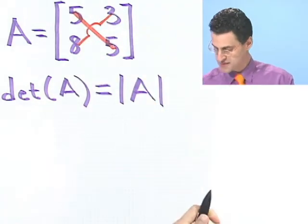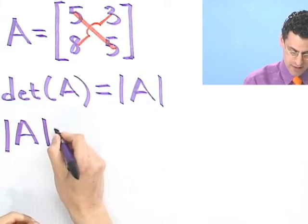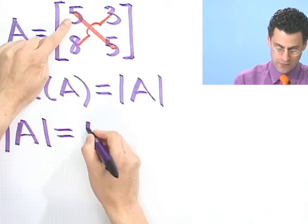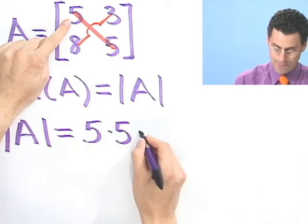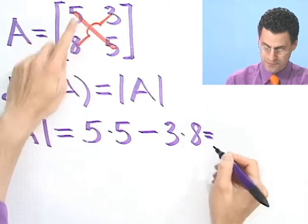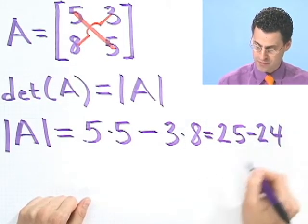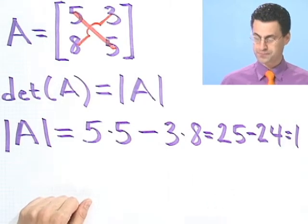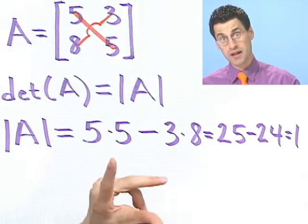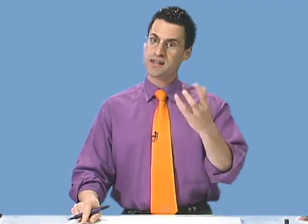So in this case, the determinant of A equals 5 times 5 minus 3 times 8. And so that's 25 minus 24, and that equals 1. So in fact, the determinant of this particular matrix A is 1.